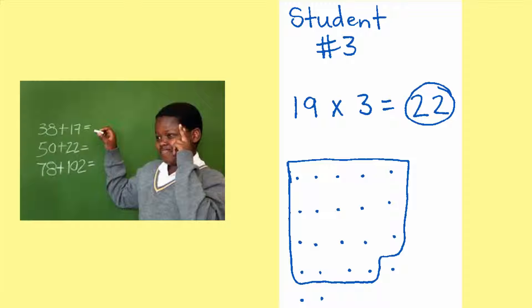Take a look at student number three. Are they fluent? We can see the student number three did not get the right answer. But then when we look at what they did, their thinking, we can see that they weren't even thinking multiplication, they were thinking addition. This is a problem.